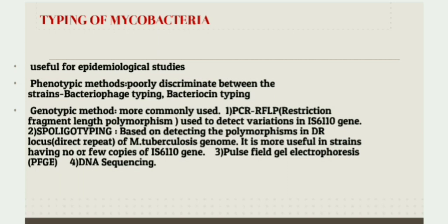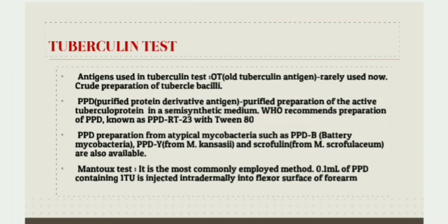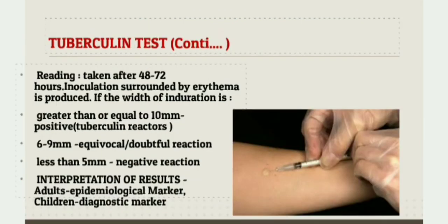That covers the diagnosis of extra pulmonary TB. Now let's discuss the diagnosis of latent TB. Two methods are available: first, the tuberculin test, and second, interferon gamma release assay (IGRA). Latent TB is diagnosed by demonstration of delayed or type 4 hypersensitivity reaction against the antigen of the bacteria. The antigens used for the tuberculin test are OT (old tuberculin) and PPD (purified protein derivative). In this test, 0.1 ml of PPD containing one tuberculin unit is injected intradermally into the flexor surface of the forearm.